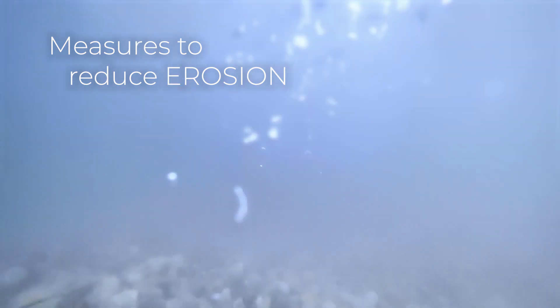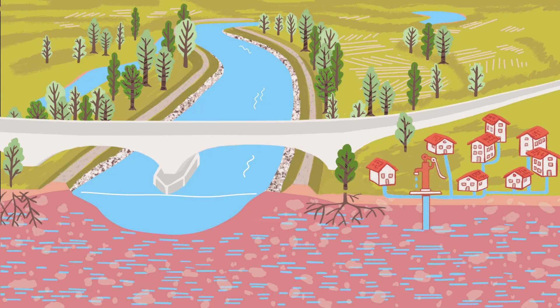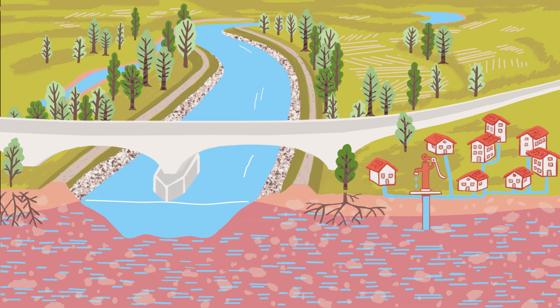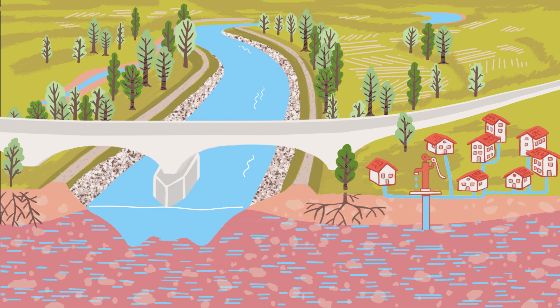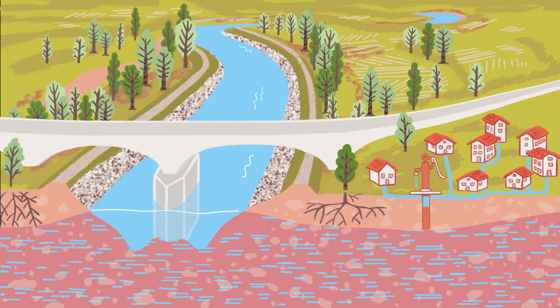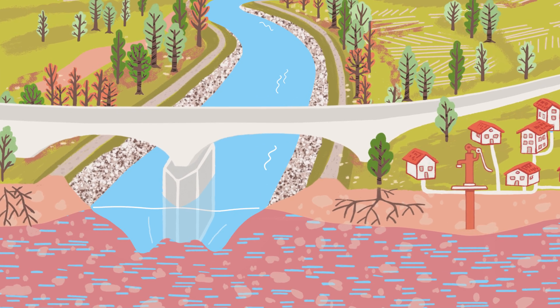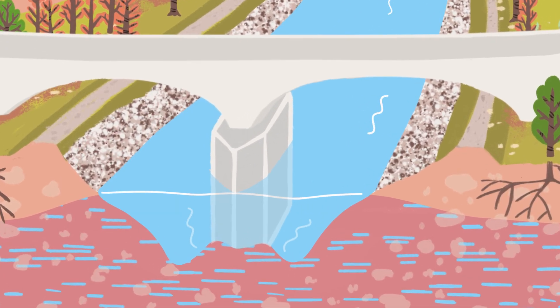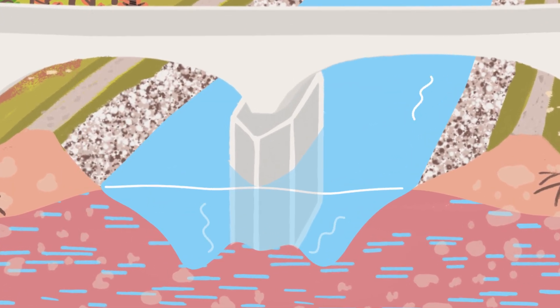Strong erosion can lead to riverbed deepening. This affects nature, land use, and the water supply. If the riverbed deepens too much, man-made structures like bridges can become unstable.